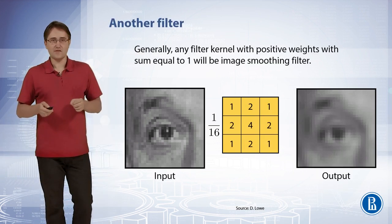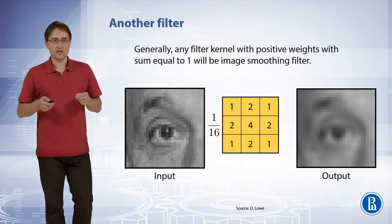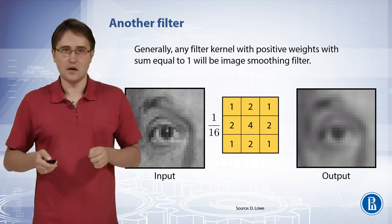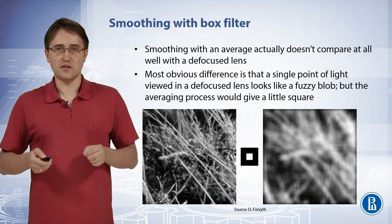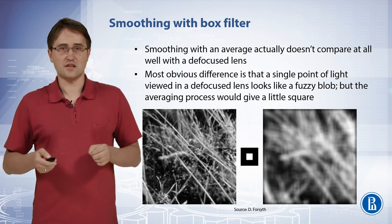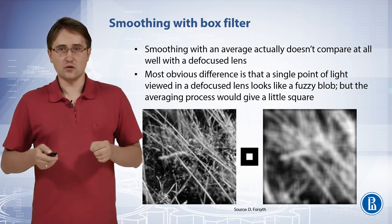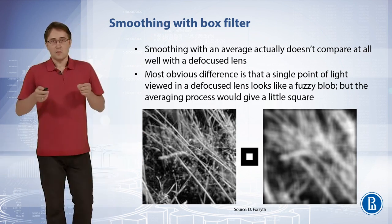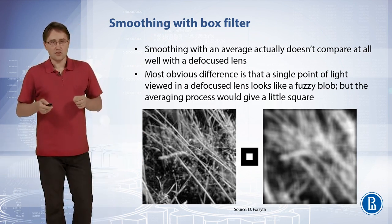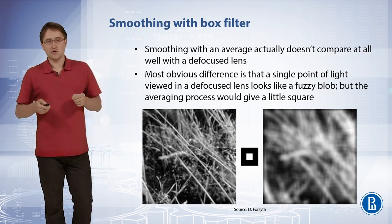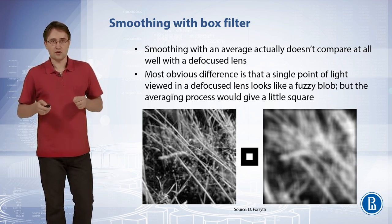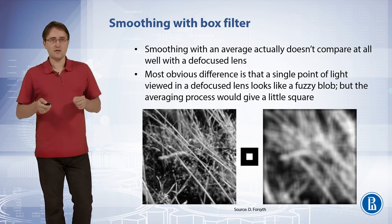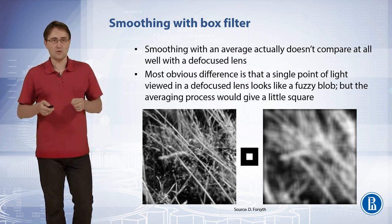Generally, any filter kernel with all positive weights and with sum equal to 1 will blur the image. Here is an example of box filtering an image with a lot of fine details. You can see that a lot of spurious lines appear in the right image after smoothing. We believe that a smoothing operation should look like an image from a defocused lens, and we can see that smoothing with averaging does not compare well with a defocused lens at all.